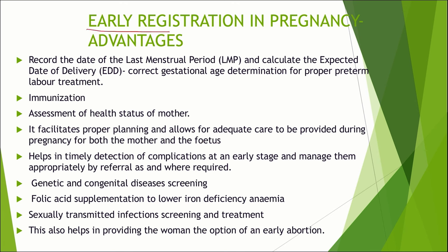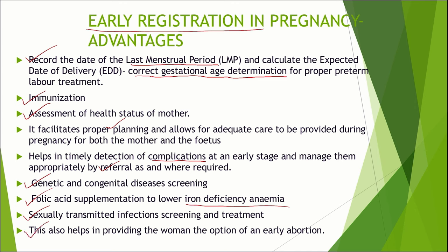About the importance of early registration in pregnancy: the advantages include recording of the last date of menstrual period and calculation of expected date of delivery using Naegele's rule. Gestational age determination can be correctly done, and immunization can be provided as early as possible. We can assess the baseline health status of the mother — weight, blood pressure, etc. It facilitates proper planning and allows for adequate care for both mother and fetus. It helps in timely detection of complications and appropriate management by referral when required. Genetic and congenital disease screening, folic acid and iron supplementation, and STD screening can also be done. We can develop rapport with the mother and provide the option of abortion if the pregnancy is early, as at later stages it may not be possible.